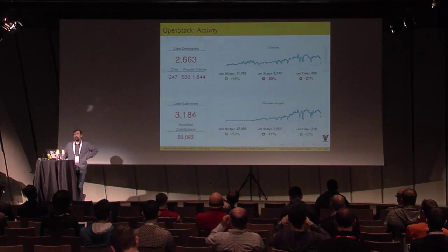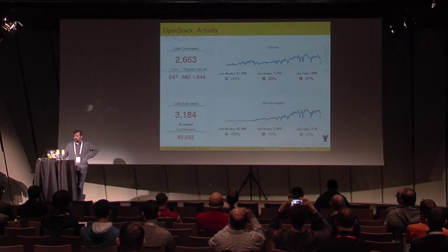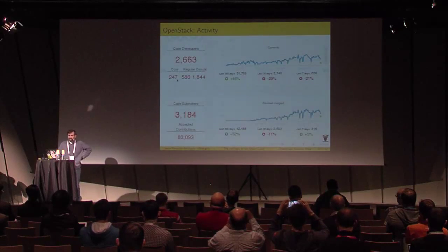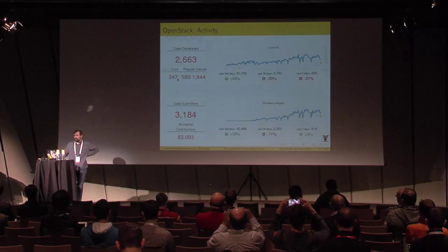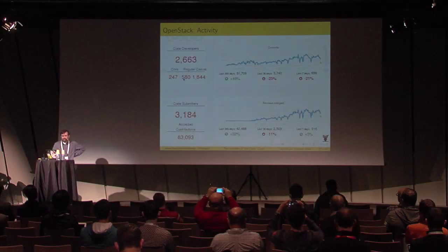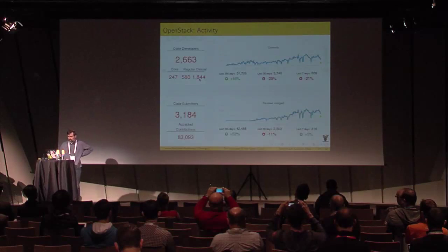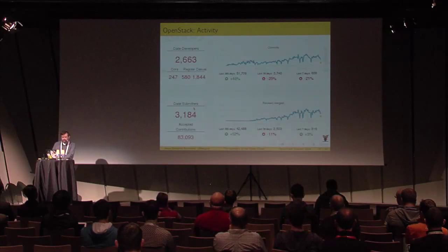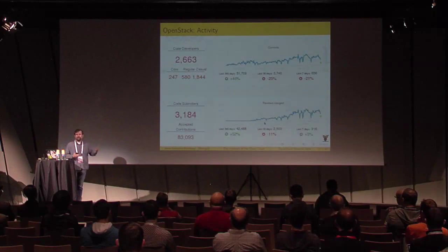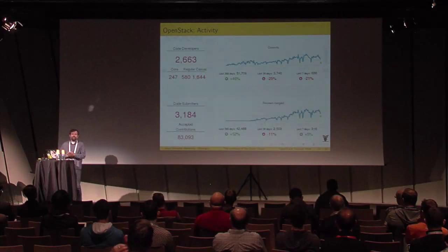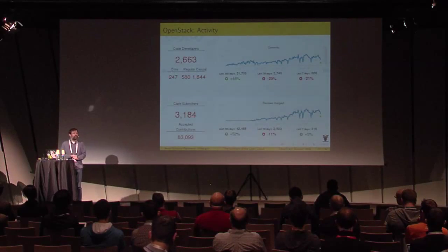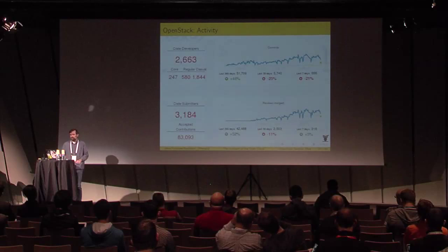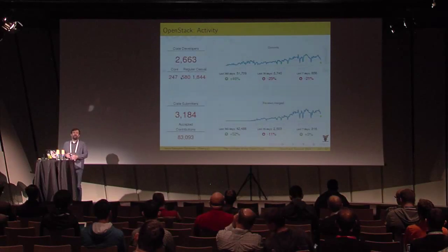OpenStack is a bit different. About 250 people are in the core team — much bigger than the others — and you also have many more regular and casual developers. If you look at the ticket numbers in the dashboard, you can see how there are a lot of people closing tickets, much more than the core, and a lot more ticket submitters.